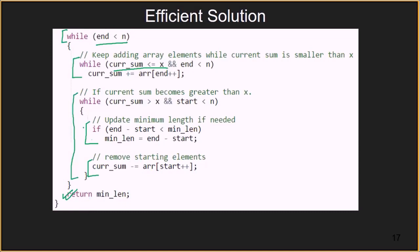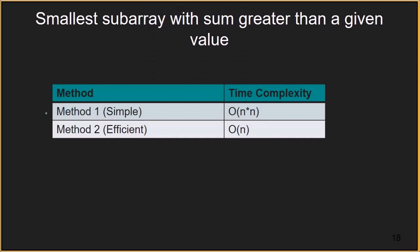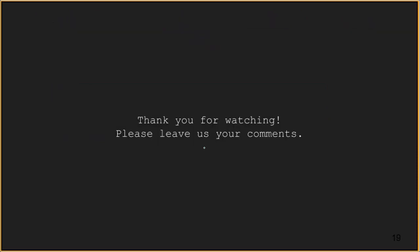By looking at the code, the time complexity of this solution might appear to be O(n²), but it is actually just O(n). This is because in the worst case, each element is added once and subtracted once from the current sum, making the complexity O(2n), which is equivalent to O(n). So in total, we discussed two methods: the first was a simple method with time complexity O(n²), and the second was an efficient method that solves the problem in O(n). That is all for this tutorial — thank you.